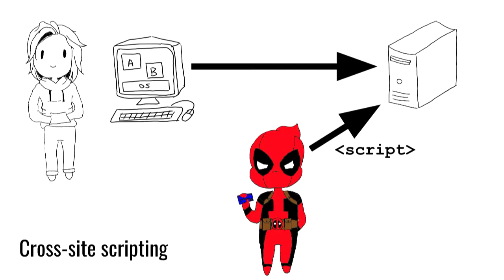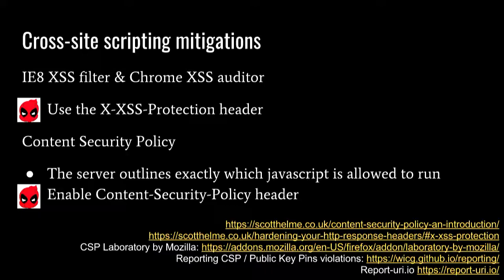A brief run-through of how cross-site scripting works: Deadpool puts some script onto a web server — maybe he enters it into a forum comment or as his first name. Then when our nice person browses that same website, the script runs on their computer. Browsers have done a mediocre effort of trying to stop XSS attacks. IE8 introduced the XSS filter — if there was some JavaScript in the URL, it wouldn't let it run on the page, which stopped reflected XSS. Chrome also has the XSS auditor. In your app, use the XSS protection header and pop that in your web apps.